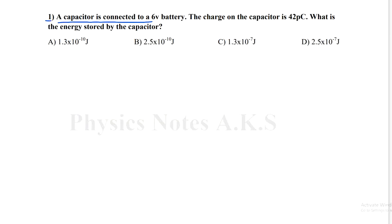A capacitor is connected to a 6 volt battery. The charge on the capacitor is 42 PC. So PC is pico-coulomb. The question is what is the energy stored by the capacitor.